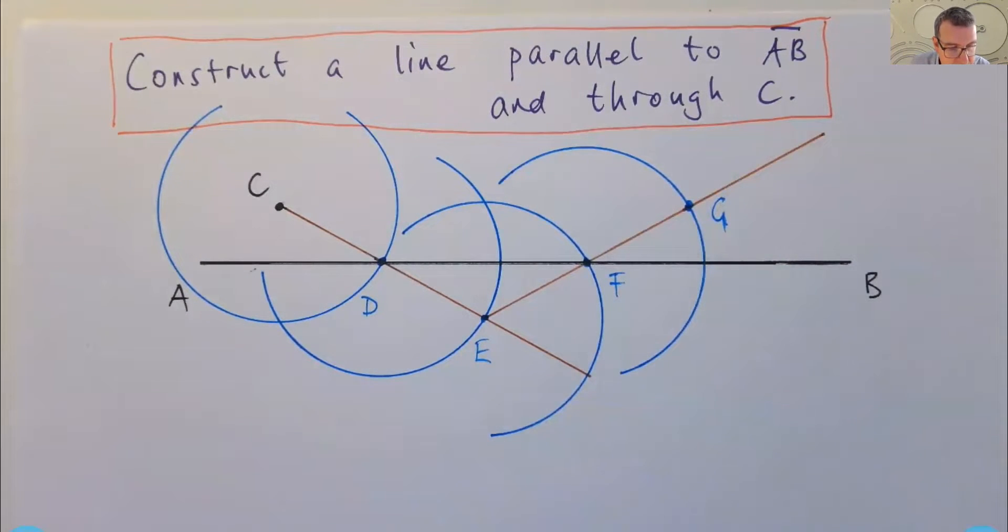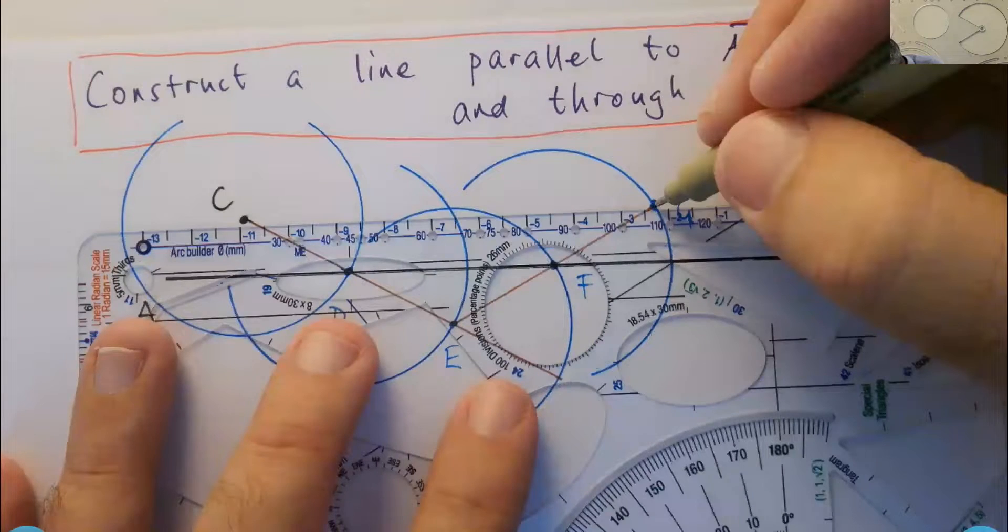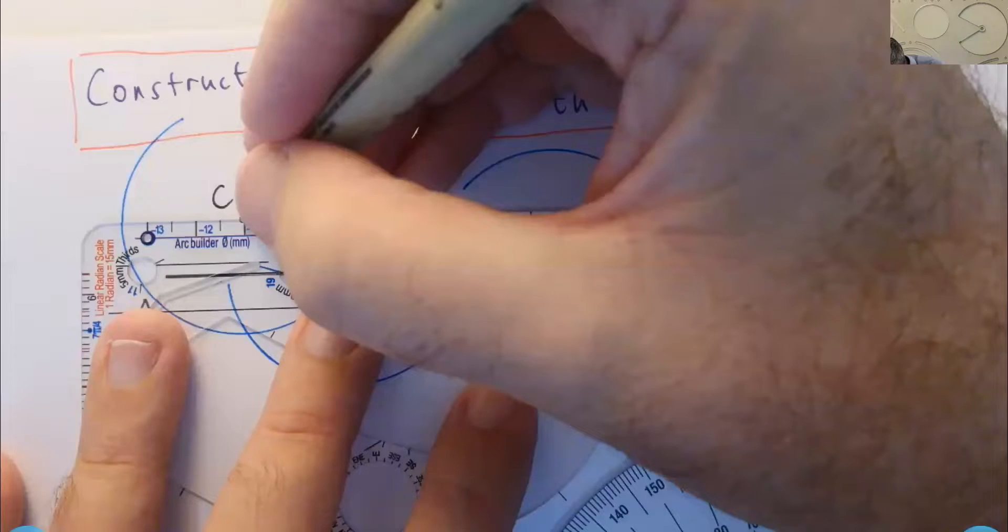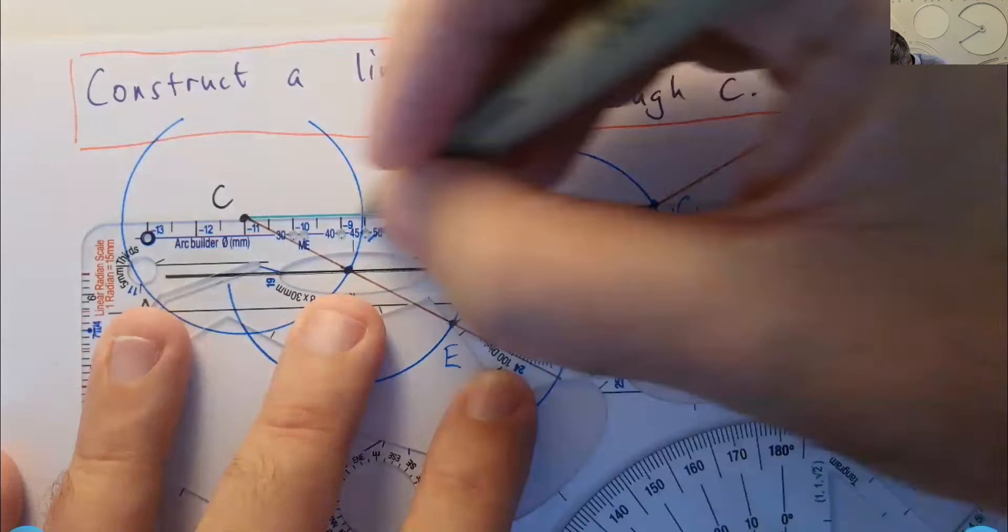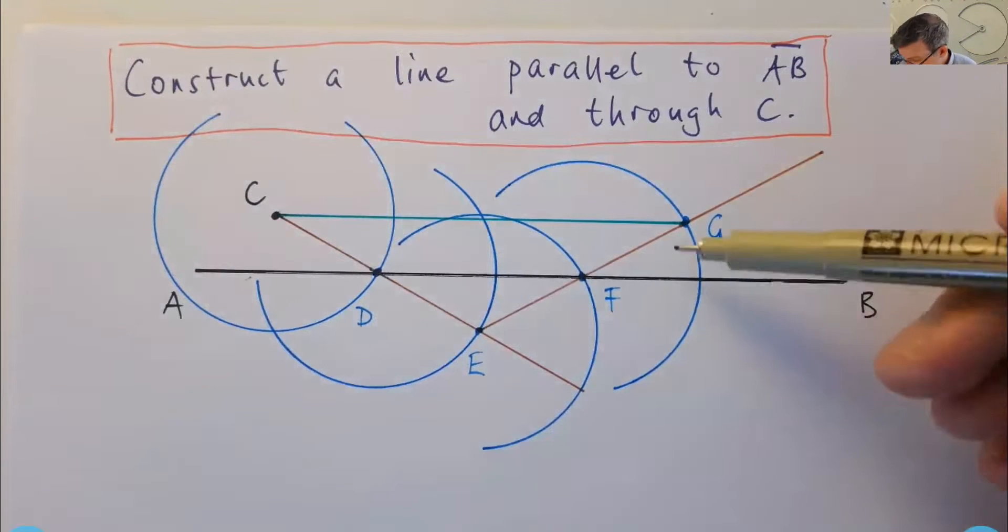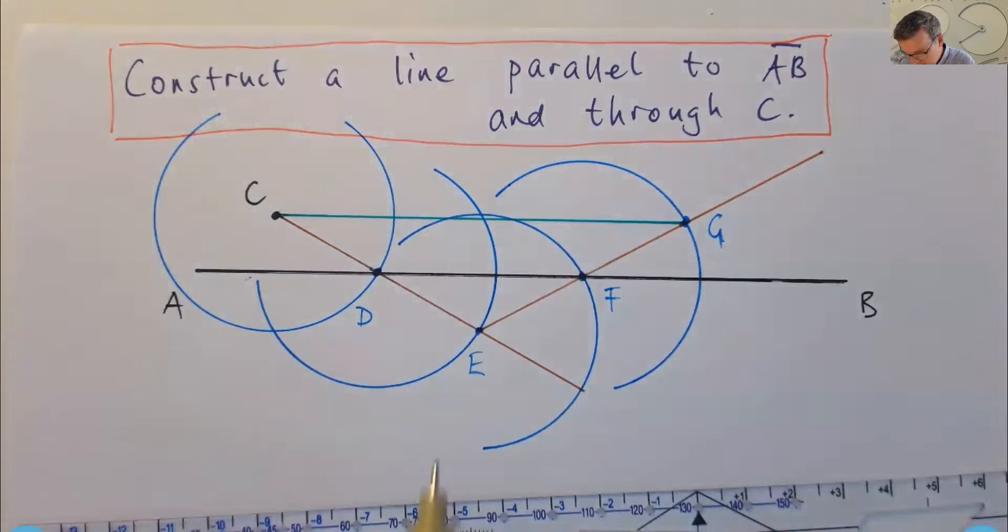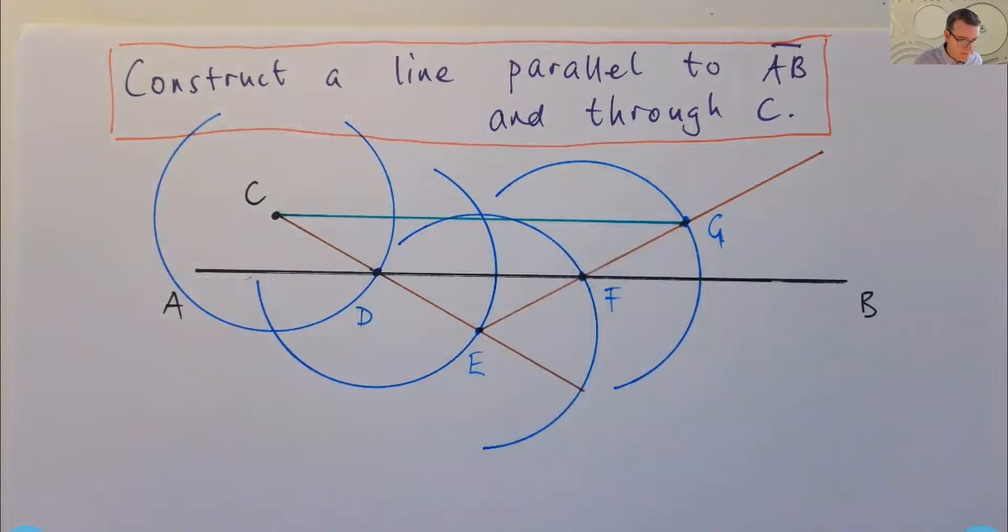And now let me move over to green. I can draw in my line segment. And if you look at this, just by eye, it looks very parallel. CG looks parallel to AB. So you can kind of see, it looks very precise. And I'm not sure you'd be able to get that kind of degree of accuracy with a compass. But let's go through and actually have a look at how we might justify this construction. Now there's probably lots of ways you can do it, but let's look for a minute.